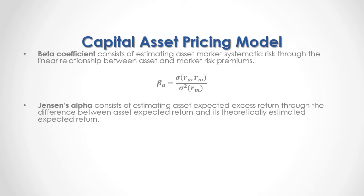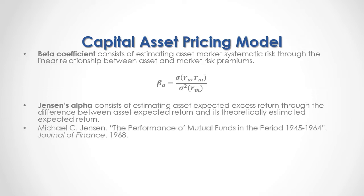Jensen's alpha consists of estimating asset expected excess return through the difference between asset expected return and its theoretically estimated expected return. For full reference, I recommend that you read Michael Jensen's 'The Performance of Mutual Funds in the Period 1945–1964,' published in the Journal of Finance in 1968.